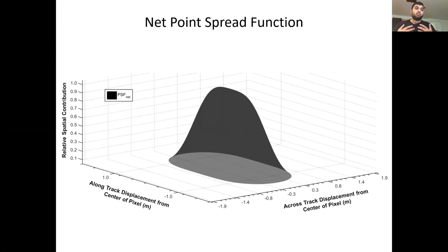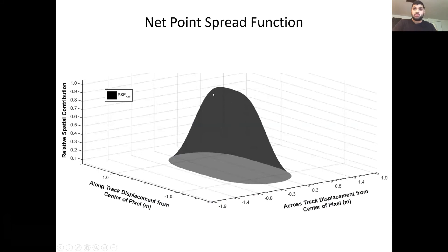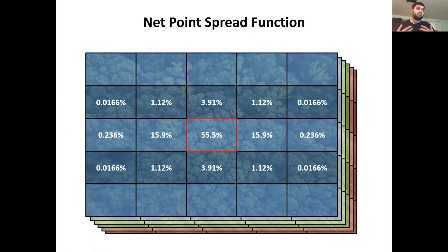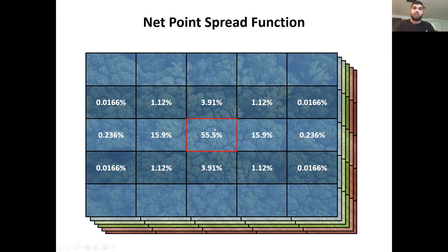Displaying the point spread function in three dimensions — with cross-track displacement, long-track displacement, and relative spatial contribution along the z-axis — we can see that although a large portion of the signal is within the spatial boundaries of one pixel, we do get substantial contributions from materials within neighboring pixels. Integrating that function over the spatial boundaries, only 55% of the signal actually originates from materials within the pixel's spatial boundaries, with the rest coming from neighboring pixels. This is not uncommon; Landsat 8 has almost exactly the same value of 55%.